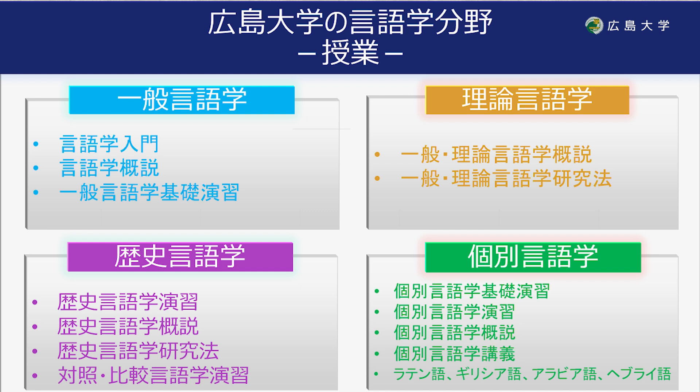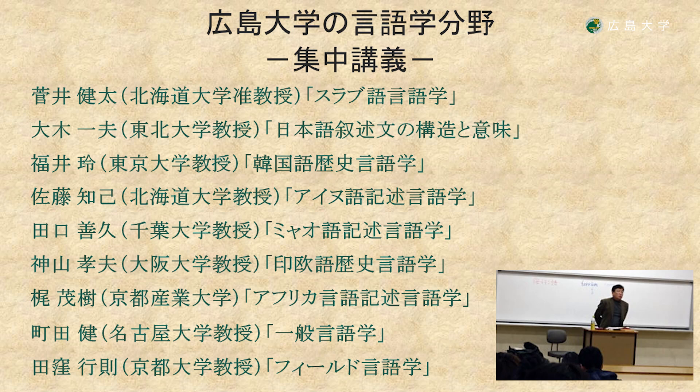次に広島大学言語学研究室について紹介したいと思います。広島大学言語学分野では一般言語学・歴史言語学・理論言語学・個別言語学に関してスライドにありますような科目を開講しております。このような科目を2年生前期から順番に配置し、入門から概説、そして演習・研究法と学んでいくことになります。